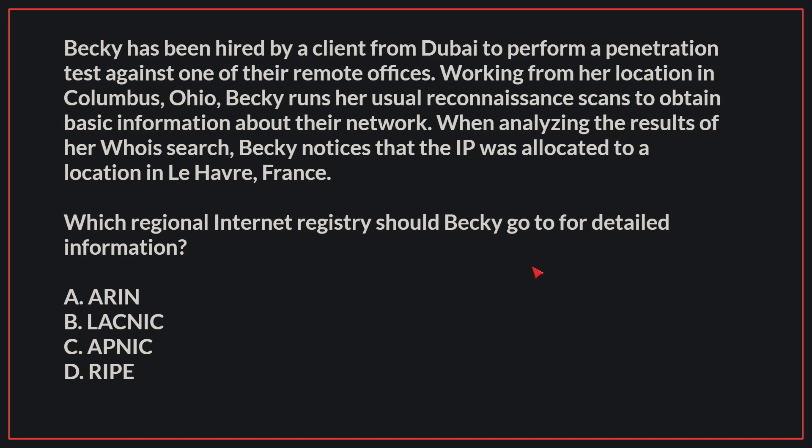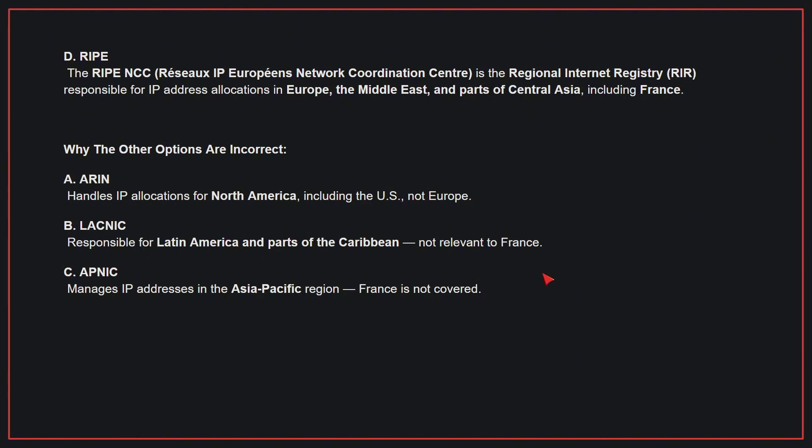The correct answer is D. RIPE. The RIPE NCC is the regional internet registry responsible for IP address allocations in Europe, the Middle East, and parts of Central Asia, including France. Why the other options are incorrect? A. ARIN — this handles IP allocations for North America, including the US, not Europe. B. LATNIC — this is responsible for Latin America and parts of the Caribbean, not relevant to France. C. APNIC — this manages IP addresses in the Asia-Pacific region; France is not covered. Therefore, the correct answer is D.